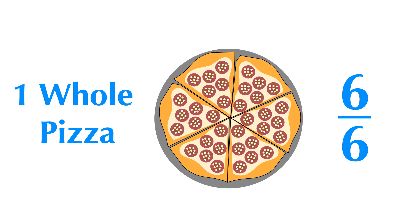We have 1 whole pizza with 6 slices. 1 whole pizza equals 6 over 6 pizzas. The top number is called the numerator. The numerator represents a part and how many of the parts we are taking. The bottom number is called the denominator. The denominator represents a whole and how many equal parts the whole is divided into.